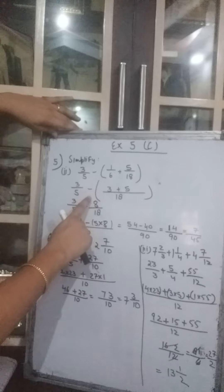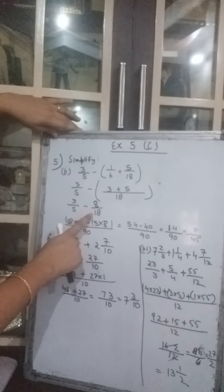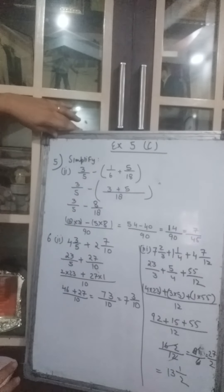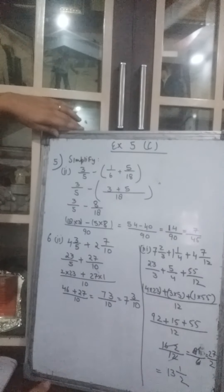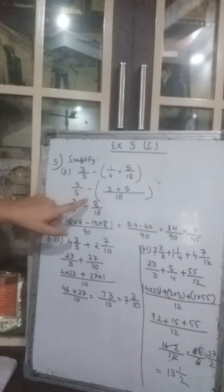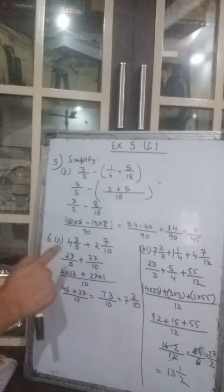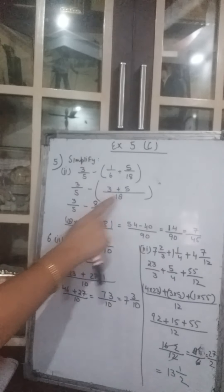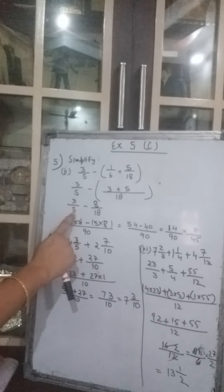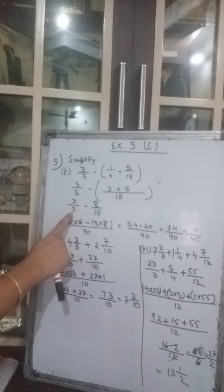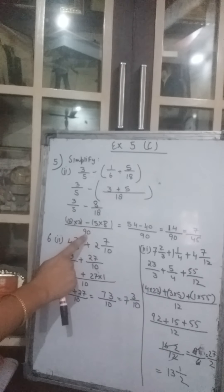You can convert this also into simplest form here or in the end — up to you. I have written it as 8 upon 18. The denominators are different so we will find out the LCM of 5 and 18. The LCM comes to 90. 90 divided by 5 gives you 18.